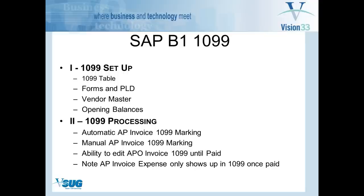We are going to first start with how you set up a 1099 table. Most of that is set up for you by SAP, but I am going to show you how you set up the new minimums for the current fiscal year for 1099. I am going to go through where you get the forms and how you can use the PLD — the print layout design — to modify them if you need to, so that we can get those forms set up. We will also look at how the vendor master can be set up to make a certain vendor.